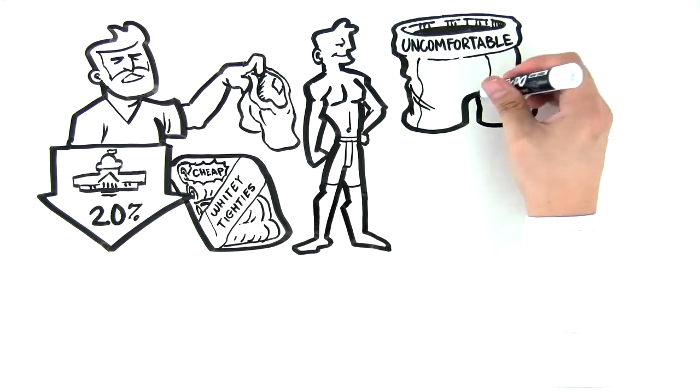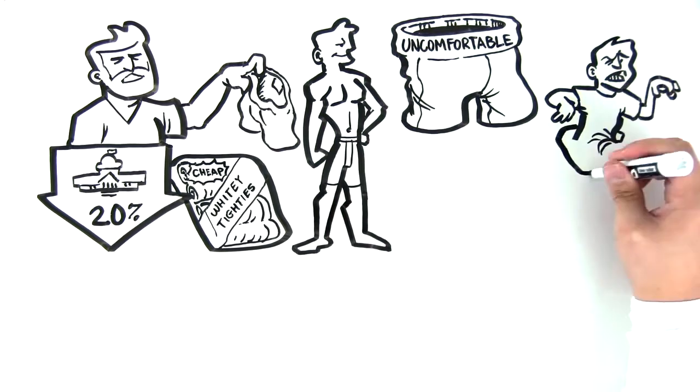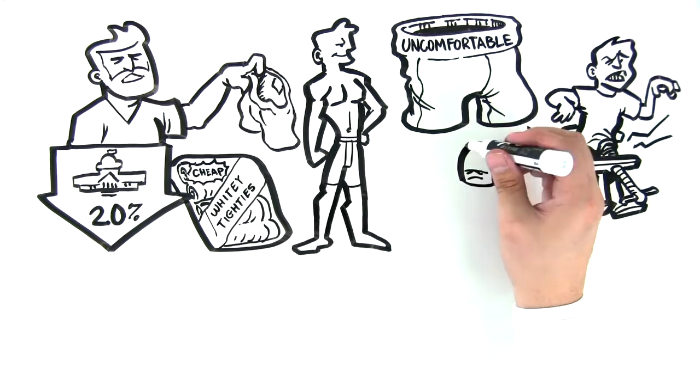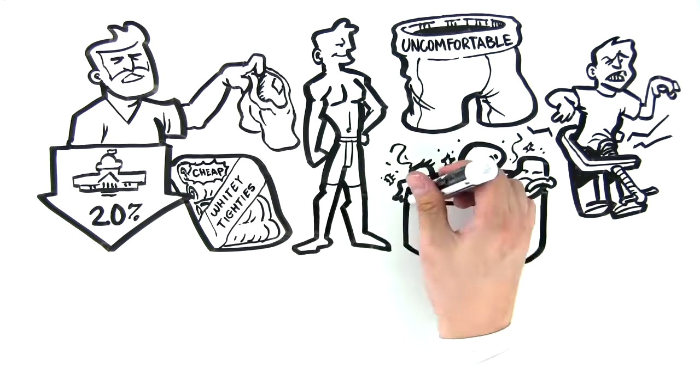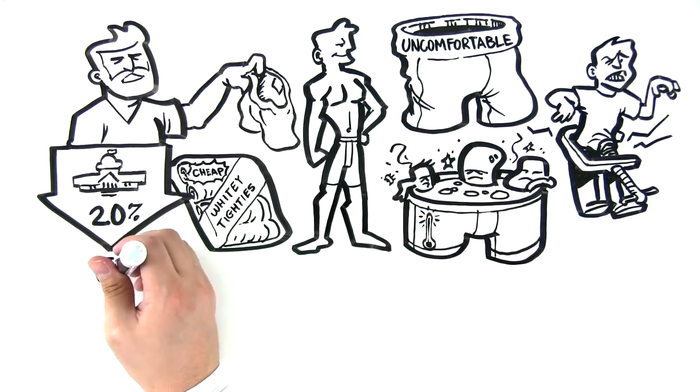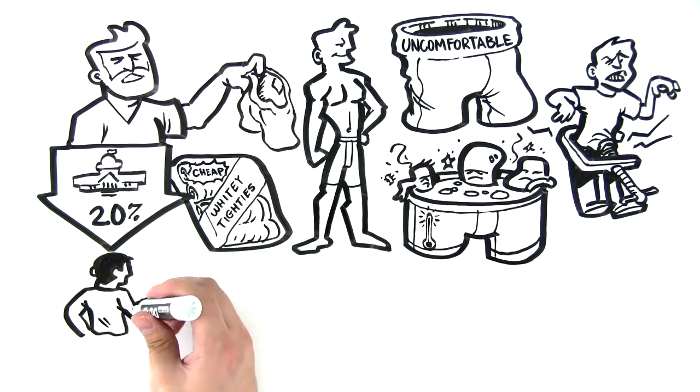Boxer briefs tighter than bike shorts, squeezing life from your legs with every step. Cotton and polyester fabrics that trap heat and bacteria, turning your groin into a smelly sauna. Thick materials bunching up, causing wedgies, chafing, and all-day adjusting.